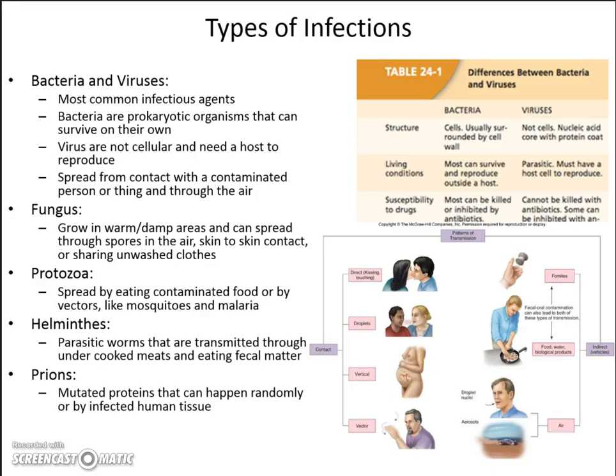Helminths is another word for worms — there are round worms and flat worms. Worms are basically contracted whenever somehow the egg gets into your mouth. That egg can be in dried-up feces or fecal matter, in meat that is undercooked or hasn't been cooked, and it can also transfer from person to person — if one person has the worms in their body and you have contact with that person, you can get it as well.